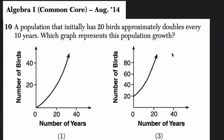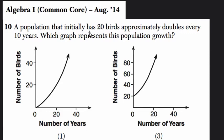Okay, please pause this video, read the question, and think about what the graph would look like. So in this problem they tell us that a population that initially has 20 birds approximately doubles every 10 years. Which graph represents this population growth?